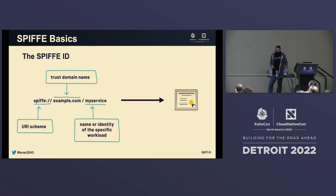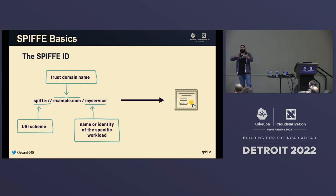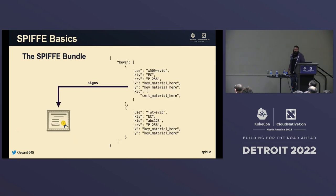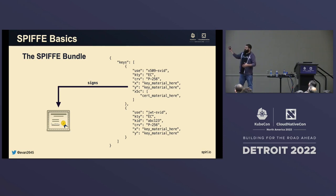Given the SPIFFE ID you can immediately see which authority issued this identity and what workload it represents. These SPIFFE IDs get encoded into a document — SPIFFE supports two documents right now: an X.509 certificate and a JWT token. There's spec around how you embed this ID into a cert or into a JWT, where you find it, and how you validate it. This is the SPIFFE ID and what we call the SVID — SPIFFE Verifiable Identity Document. There's also a thing called the bundle, which is a collection of authority keys.